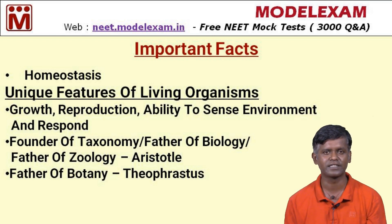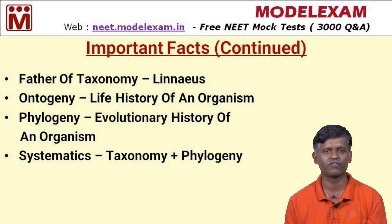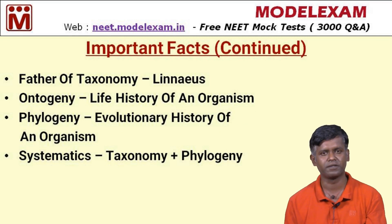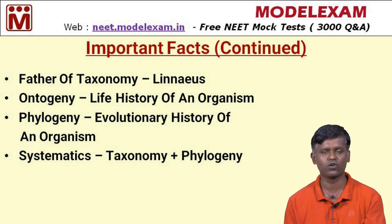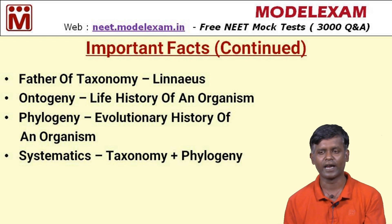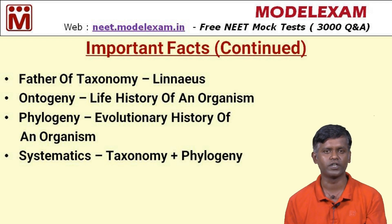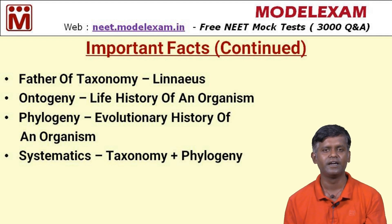The father of botany is Theophrastus, also a Greek philosopher. The father of taxonomy is Carolus Linnaeus. What is ontogeny? If we divide the word: 'onto' means life, 'geny' means generation — so ontogeny is the life history of an organism. Phylogeny means the evolutionary history of an organism.